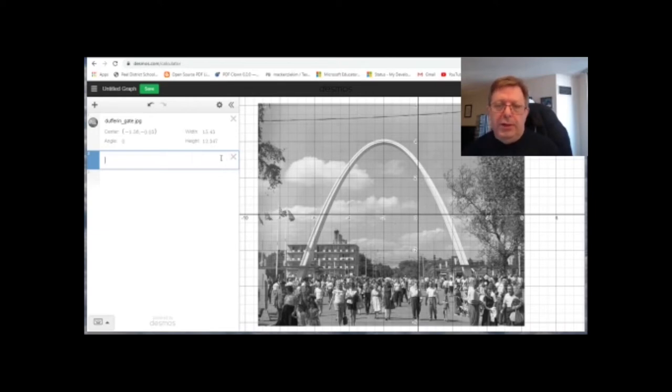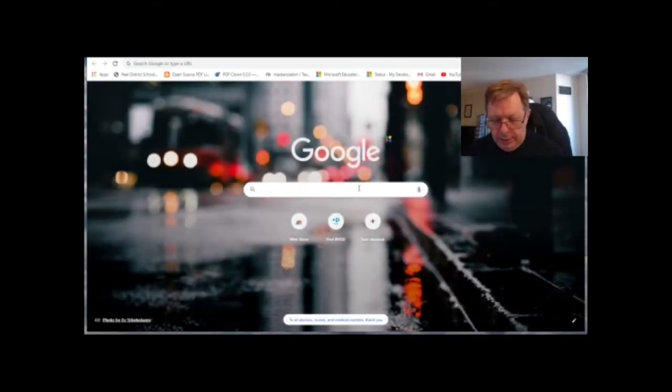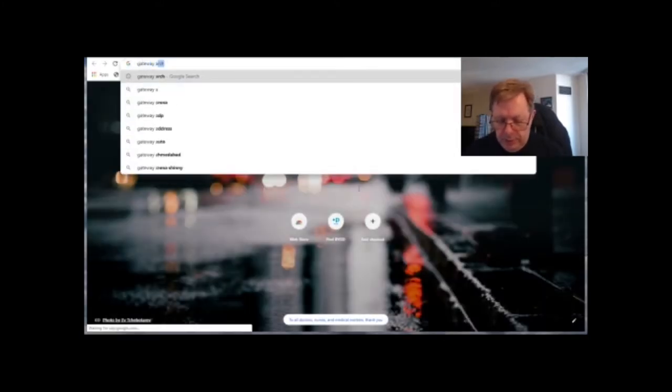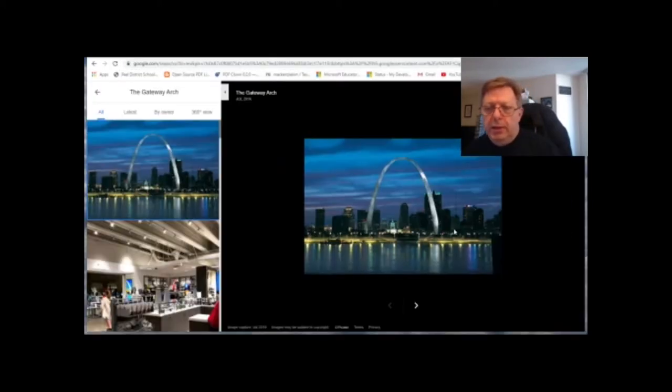And the Dufferin Gate is not like some of the arches made recently. Some of the arches made recently, like the Catenary Arch over at St. Louis, Missouri. It's called the Gateway Arch. It looks like this, and you can see it's not exactly a parabola, is it? It is a curve.